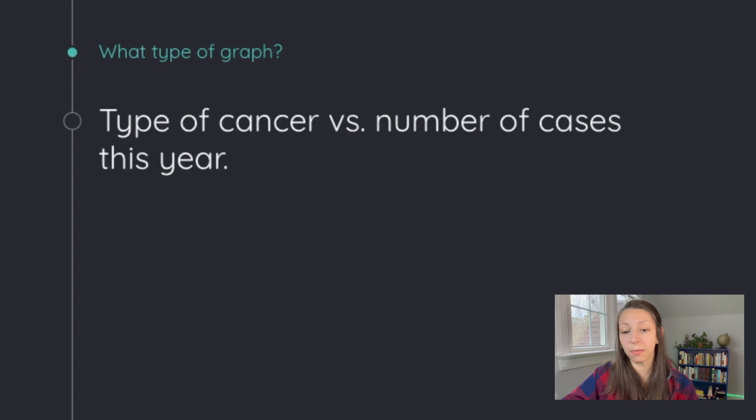Now the type of cancer versus the number of cases this year. Well, the type of cancer could be our categories, and the number of cases is a numeric factor. So we would probably choose a bar graph to compare these different categories together.